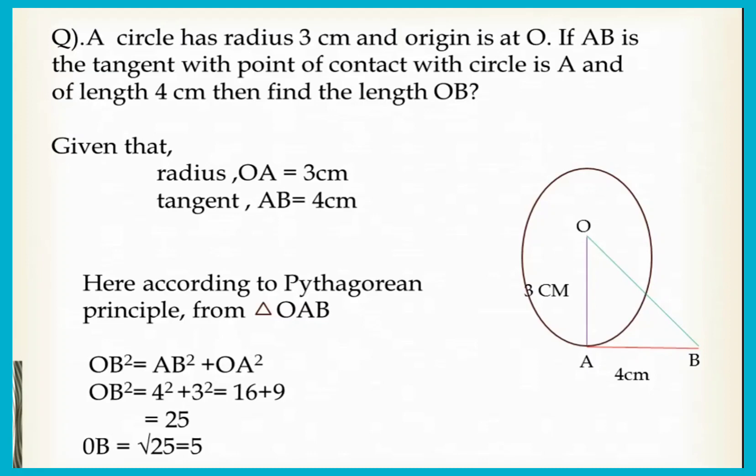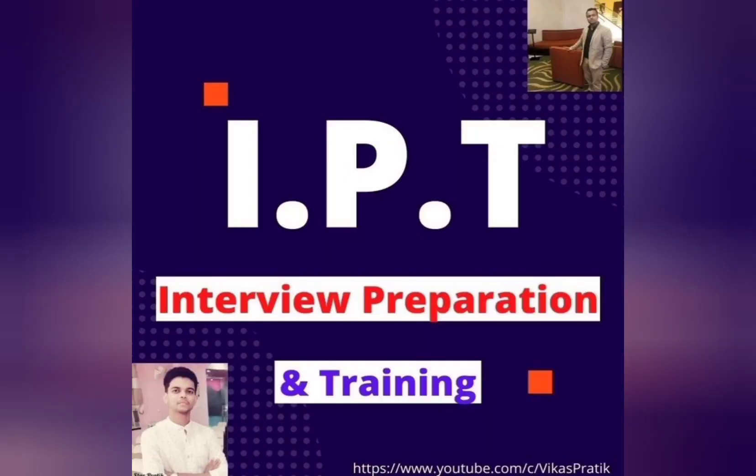Then substituting the AB and OA values, we get OB² = 4² + 3² = 16 + 9 = 25. So OB = √25 = 5. So I hope that you understood this class well. I am going to wind up this class. Thank you and have a nice day.